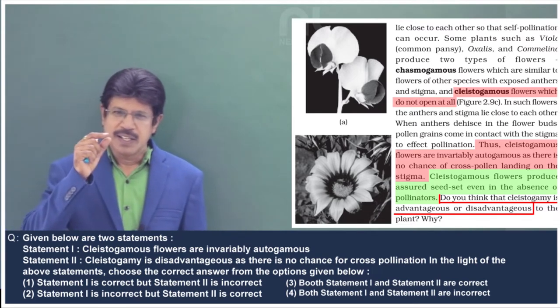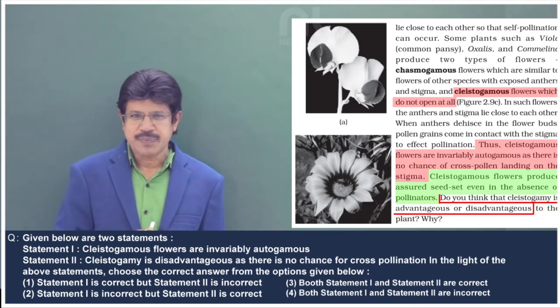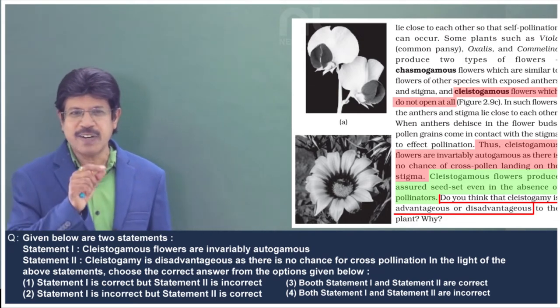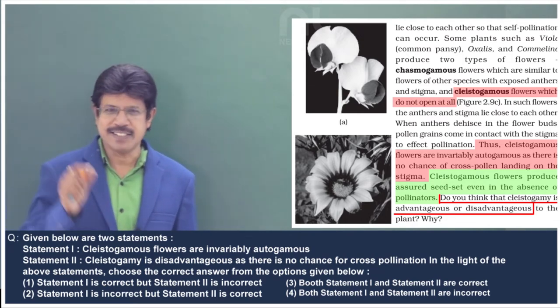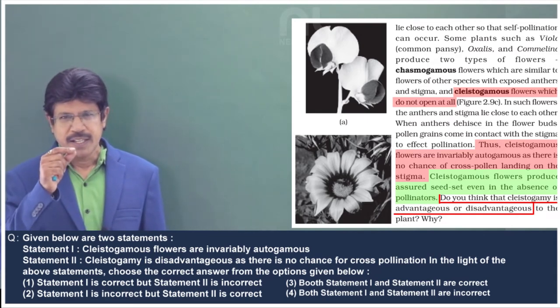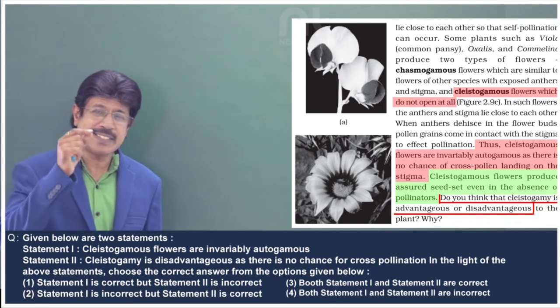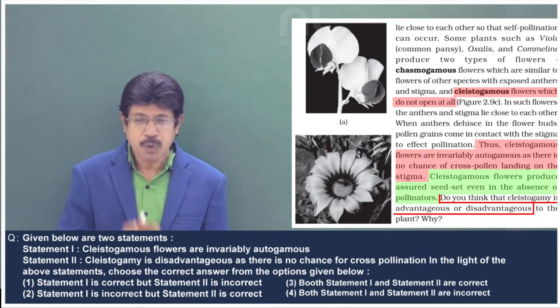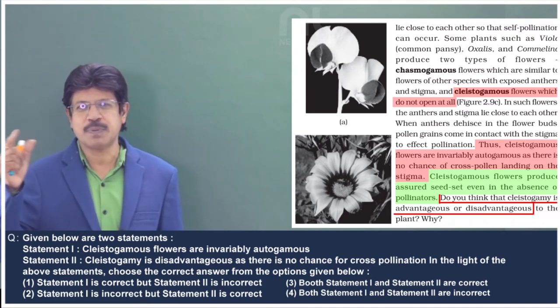The cleistogamous flower, in absence of cross-pollination, is it advantageous or disadvantageous? As per the textual lines, there is assured seed set even in absence of pollinators. Pollinators are required for cross-pollination.